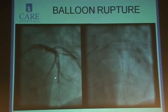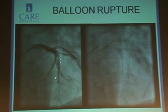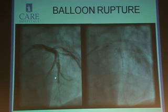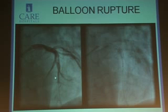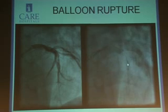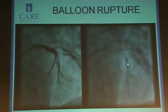You can see the LAD stent, and that was the distal dissection. We took a 2.75 by 12 mm stent and thought we'd just seal the dissection. The first problem was that we dissected the distal end of the stent. Once we started inflating the stent, unfortunately there was a balloon rupture — and this was at around 2 to 3 atmospheres.